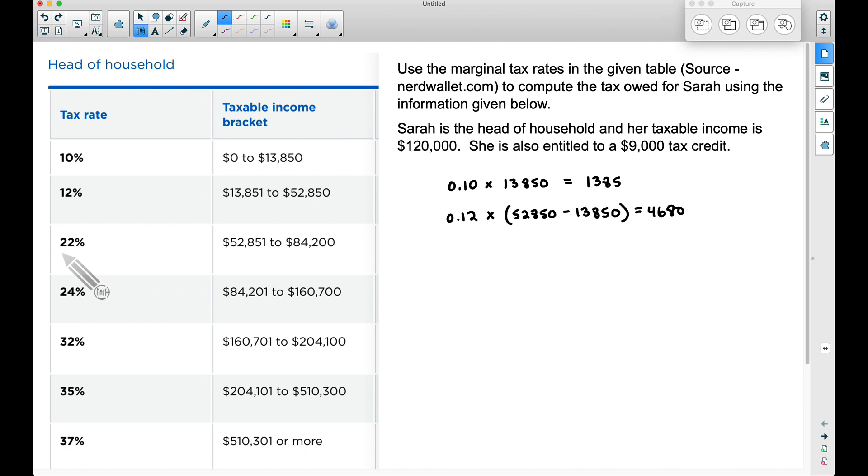The next tax bracket will be 22%, so we're going to do 22%. And now this pattern will continue. We have already found the tax owed up to $52,850. She did make more than $84,200, but we don't want to find 22% of that full amount. We want to find 22% of the difference between this $84,200 and $52,850. And again, that is because we have already found the tax owed on these first two brackets. So let's subtract that off.